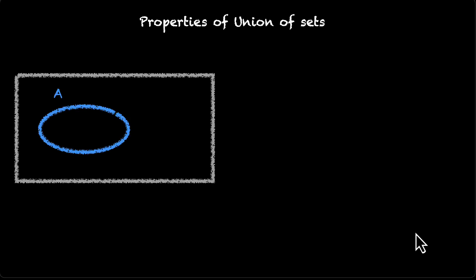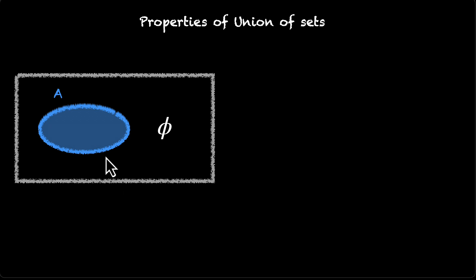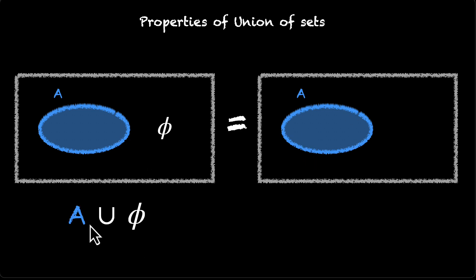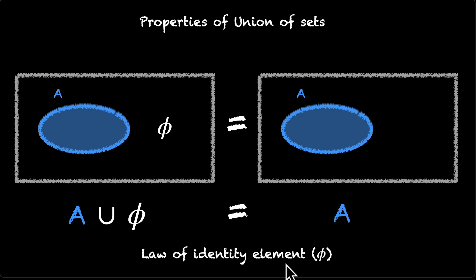Here we have the universe and set A. Let's find the union of A and phi — the empty set, which has nothing in it. When you add nothing, nothing changes. You started with A and you're still at A. So A union phi is equal to just A. This is called the law of identity element phi — identity means nothing changes.